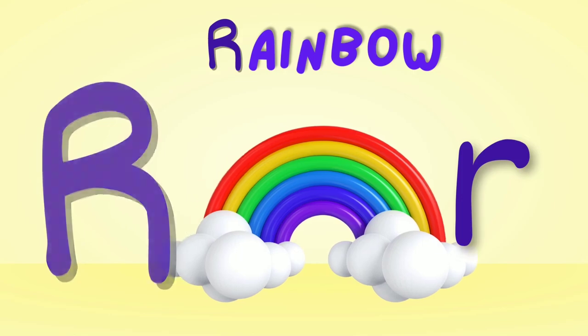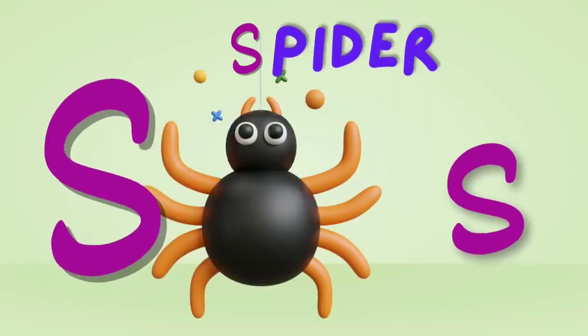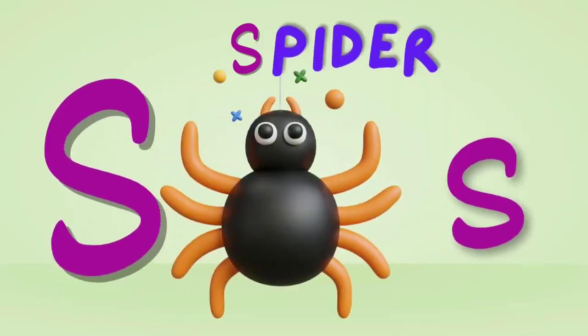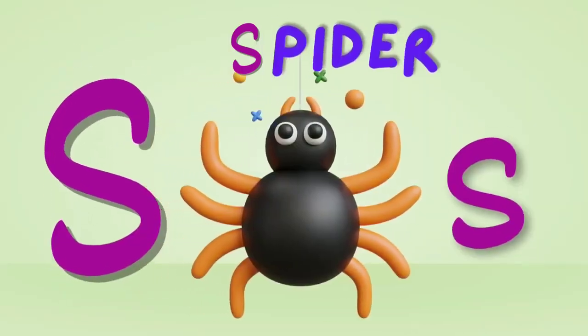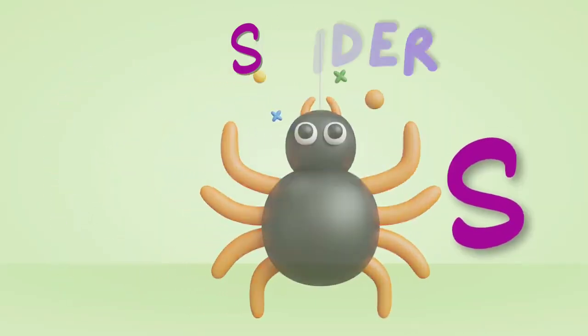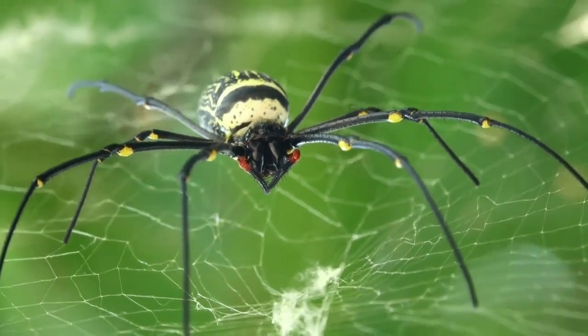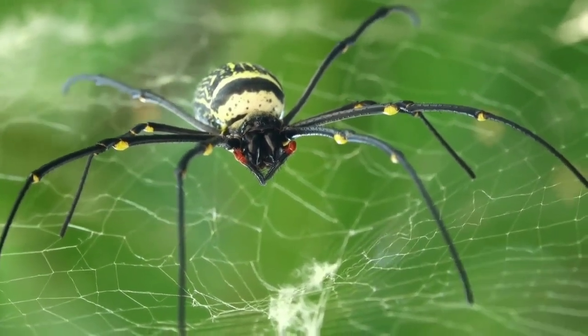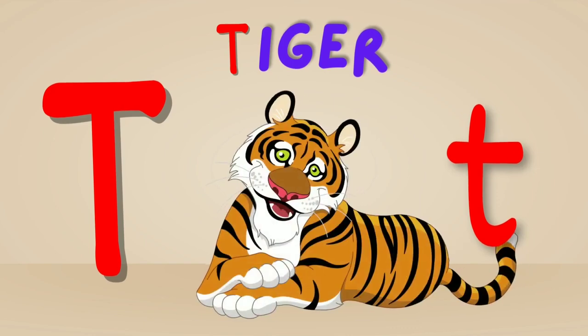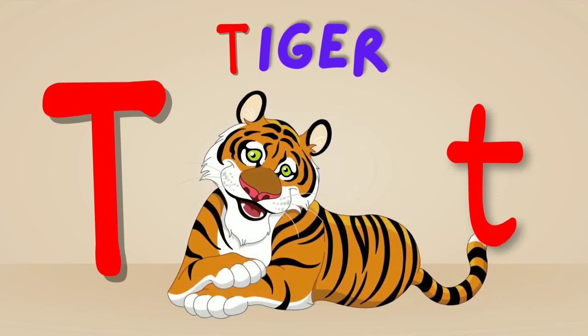R is for Rainbow. Rainbow, rainbow — this is a rainbow. S is for spider. Spider, spider — this is a spider.